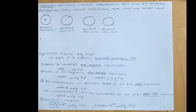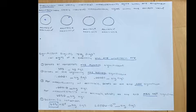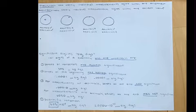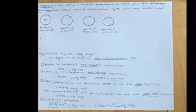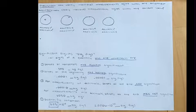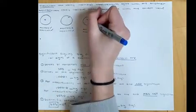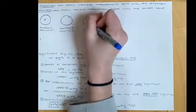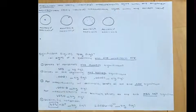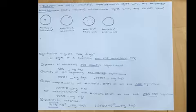For low accuracy and low precision, values are not close to each other and not close to the correct value. This would just be totally random with no real pattern.